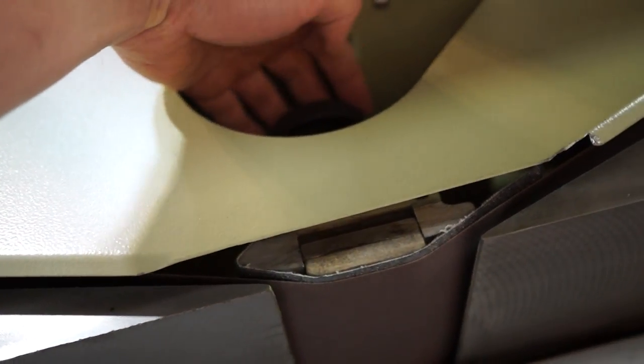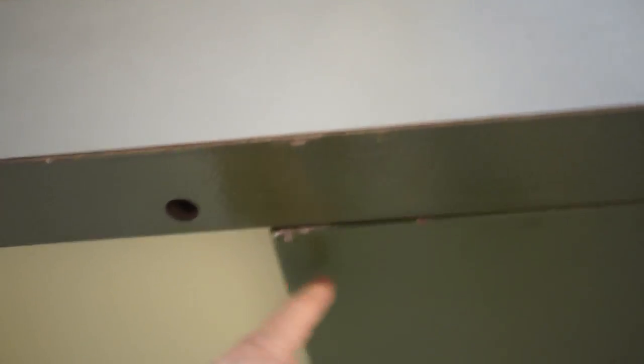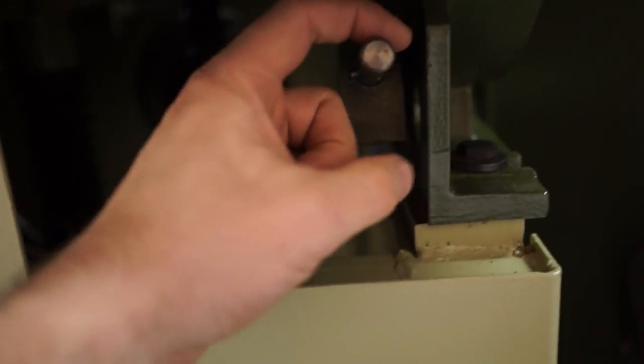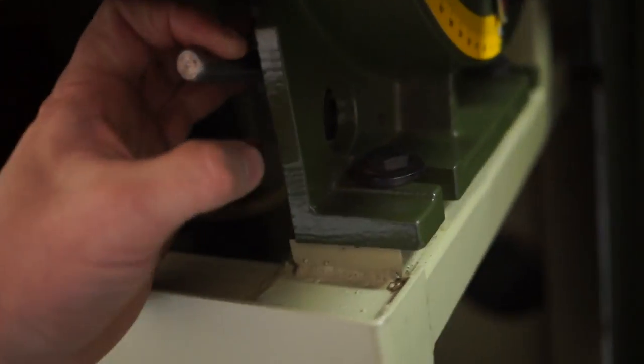You can move this pressure platen forward and backward via this hand knob right here. The back here to the side, this is your knob and your scale to tilt that table.